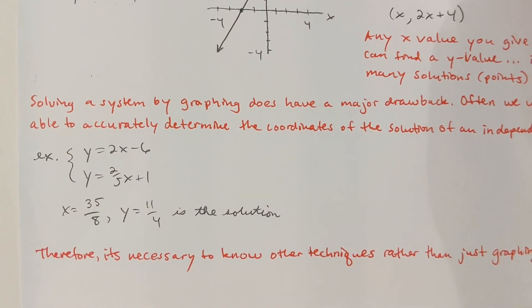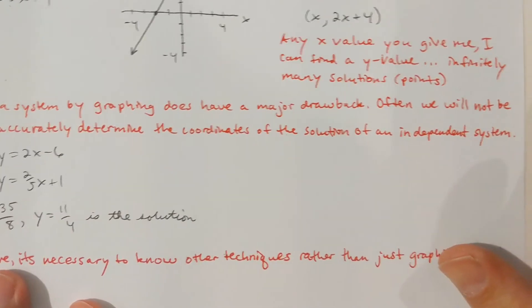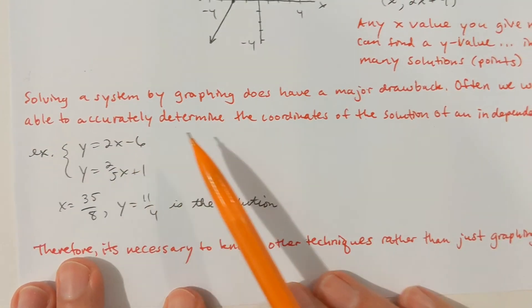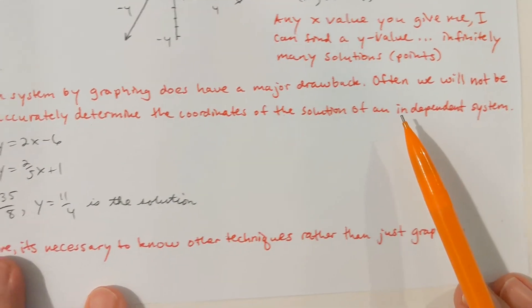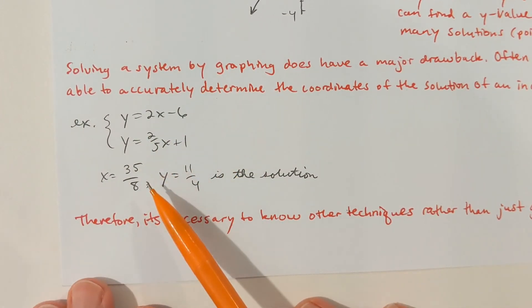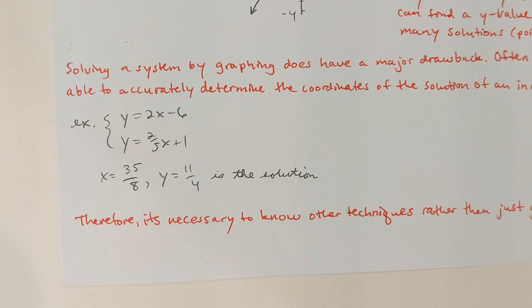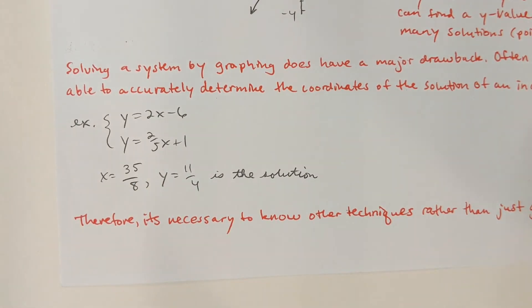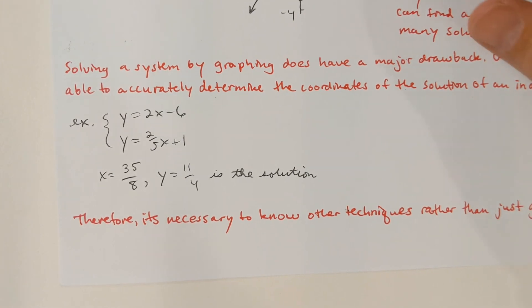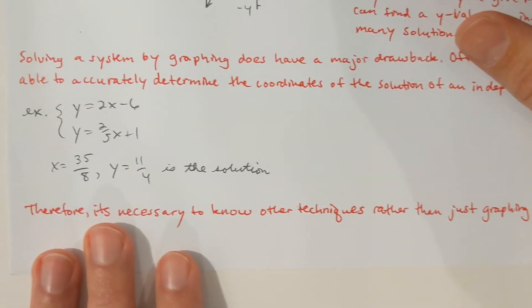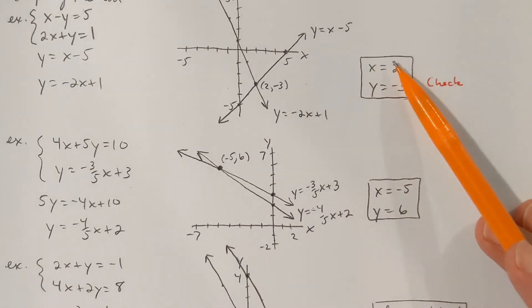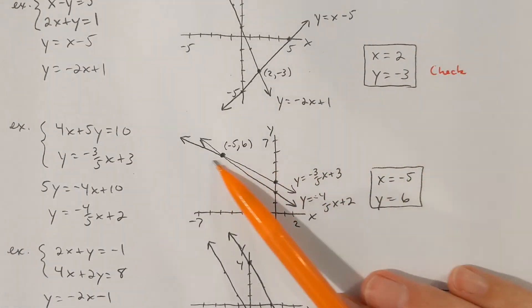Solving a system using the graphing method does have a major drawback. Often we're not going to be able to accurately determine the coordinates of the solution in an independent system. Here's an example where the solution is not numbers you'd notice on a graph — that would be hard to see unless the point was labeled. That is a major drawback. So it would be necessary to know some other techniques. The graphing method works nicely if the numbers are nice whole number values, easy to see on a graph.